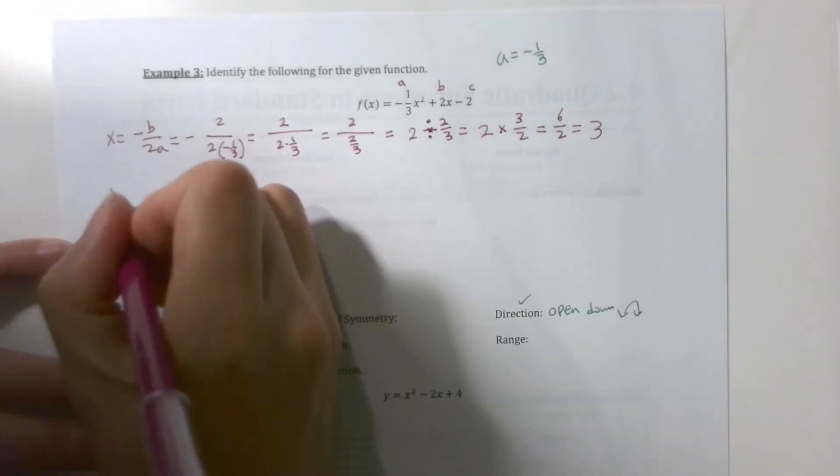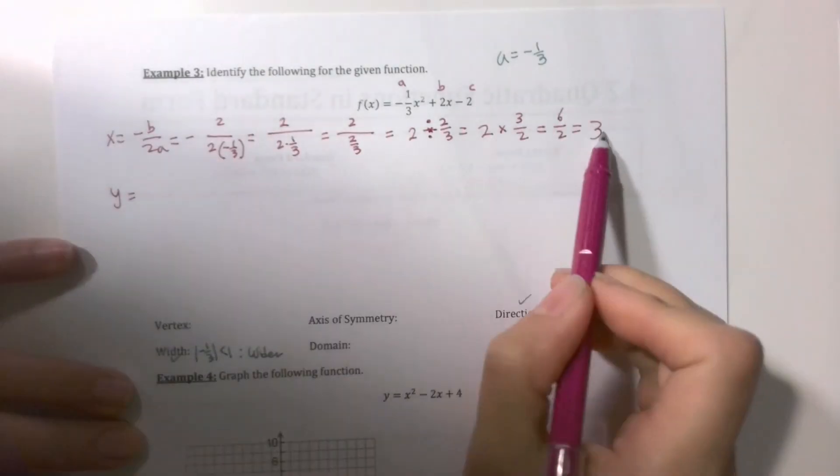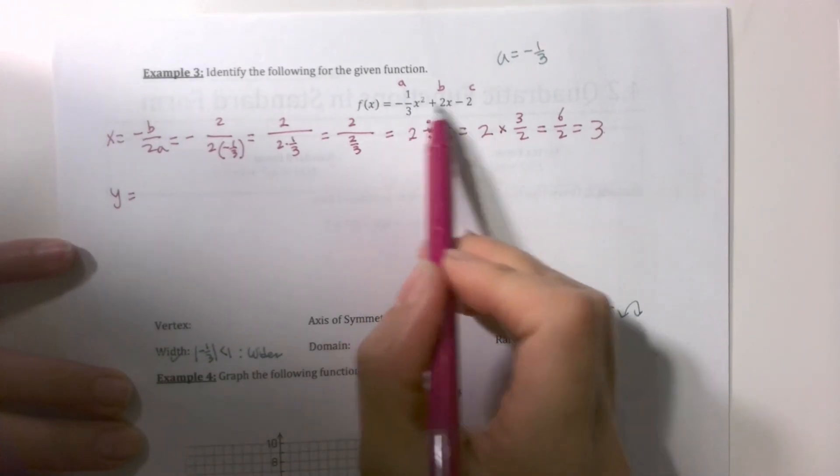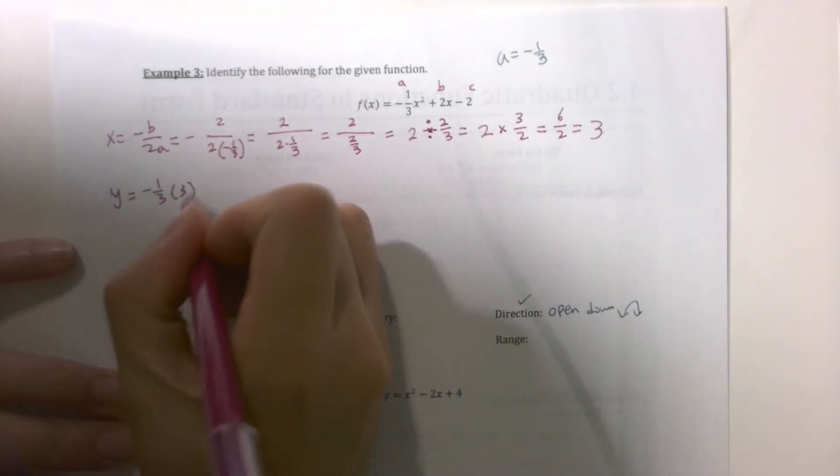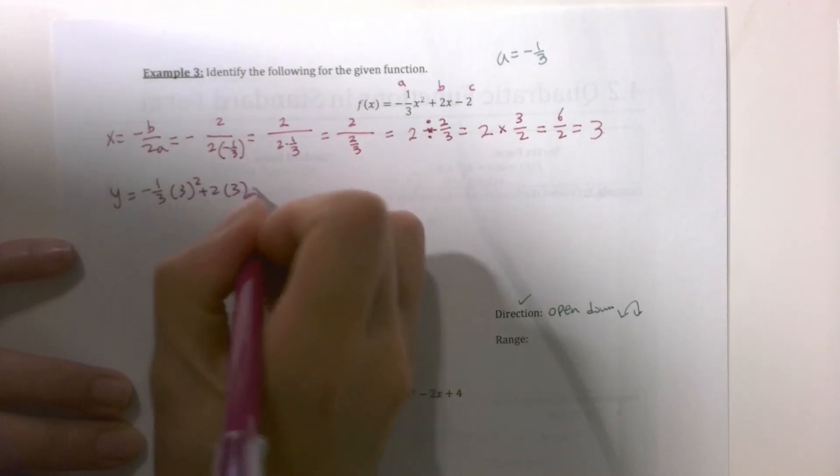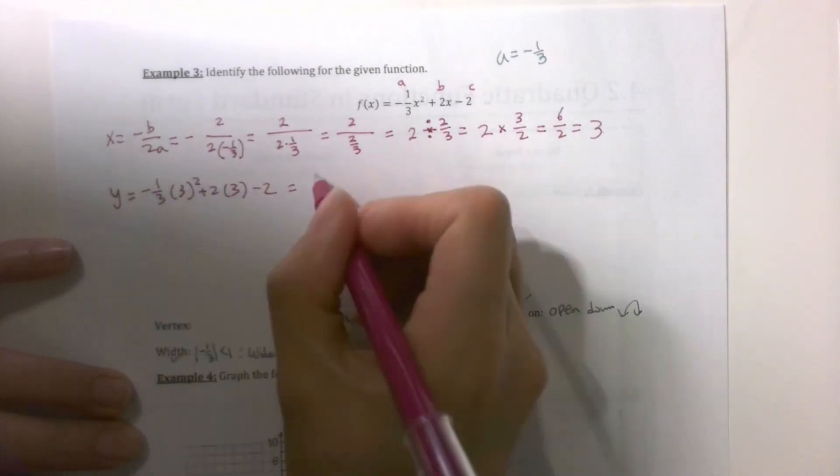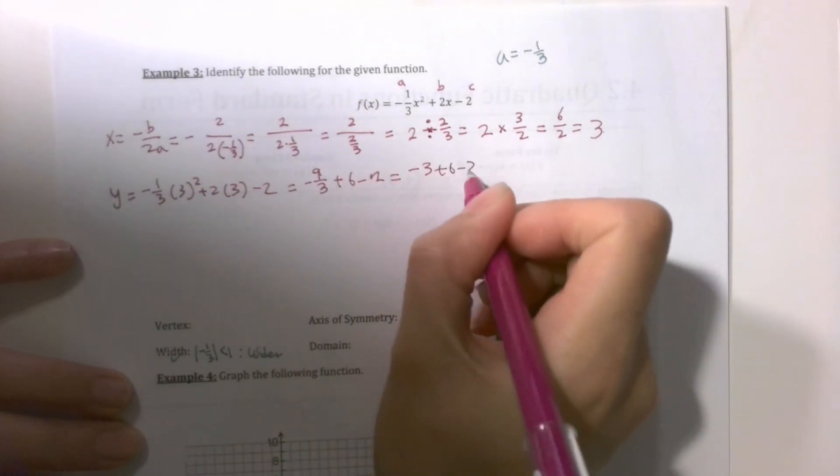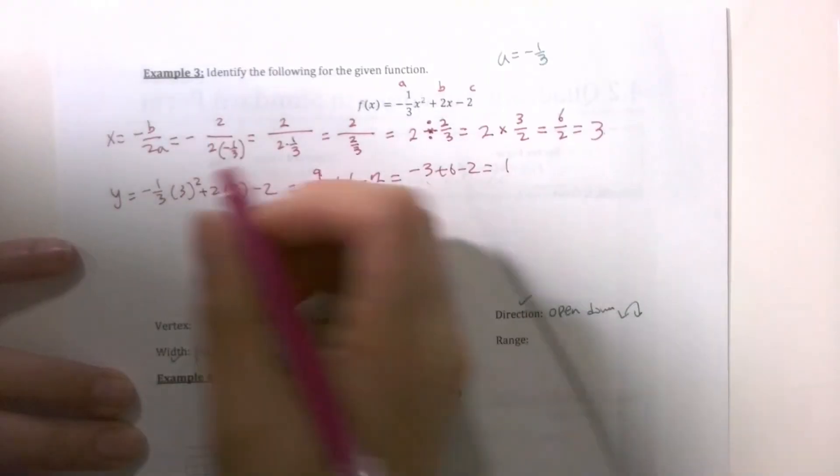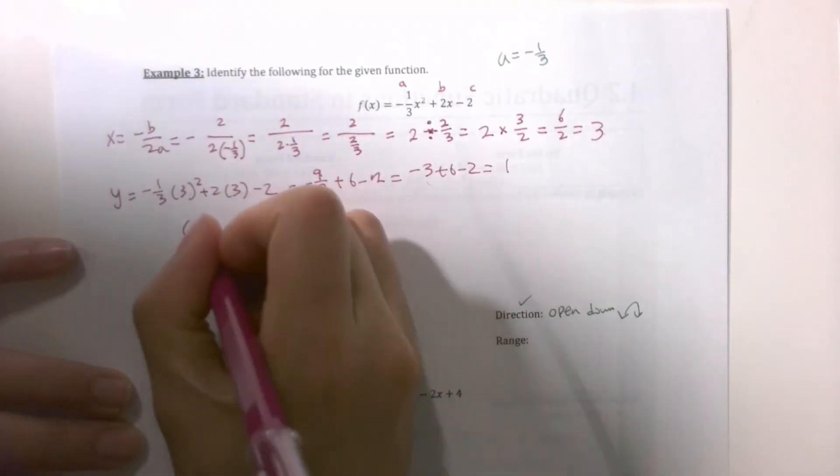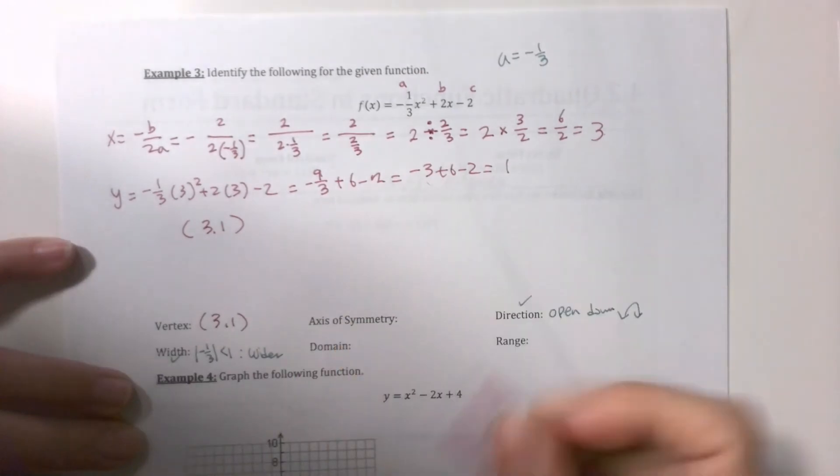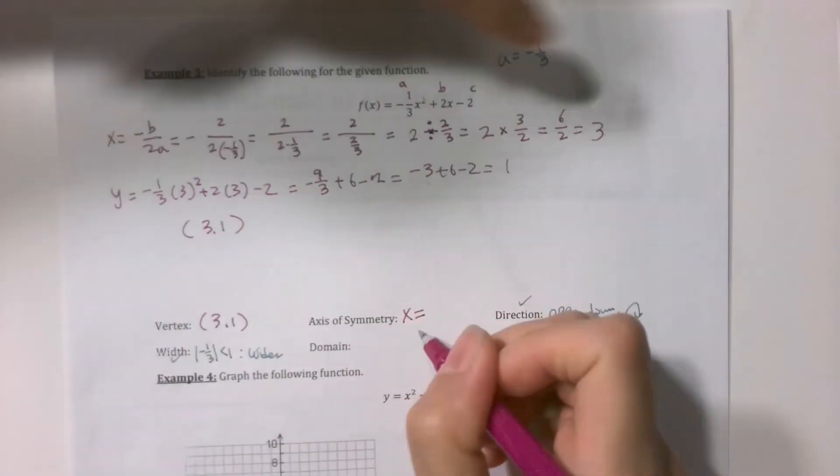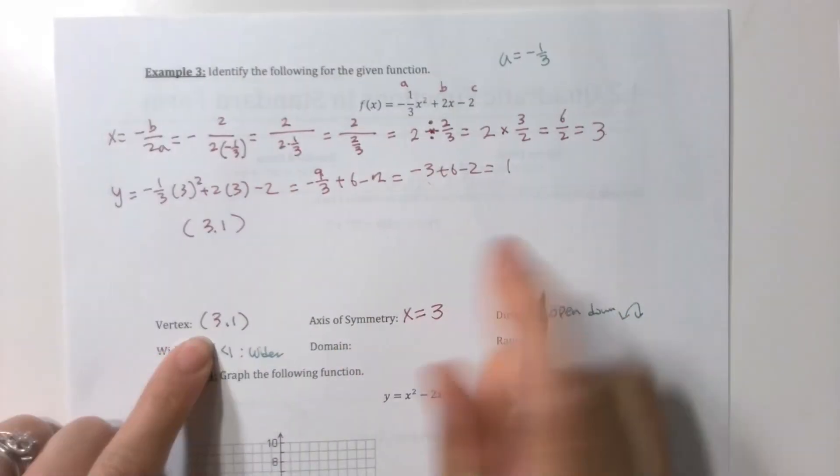Okay. So x is 3. Now how do you find the y value? You plug that 3 back into where the x's are. Simplified. 3² is 9. -9/3 + 6 - 2. -3 + 6 - 2 is 1. What's the vertex? 3 comma 1. Axis of symmetry is x = what? The same as the vertex. So these are going to be the same.